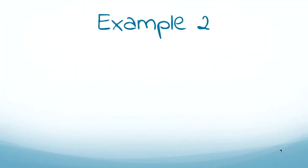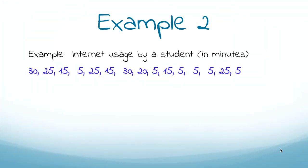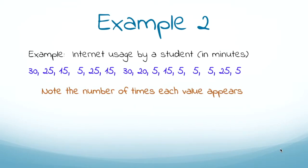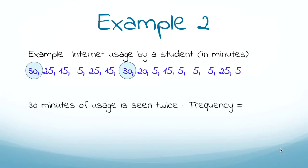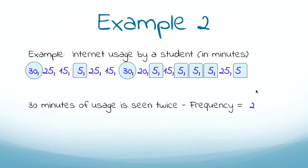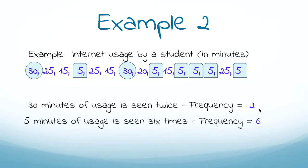Let's look at another example with numbers — the internet usage by a student. We need to figure out how many times each value appears. For example, 30 appears two times, so the frequency is two. The number 5 appears six times, so the frequency is six. I'll let you figure out the frequency of the rest of the numbers on your own.